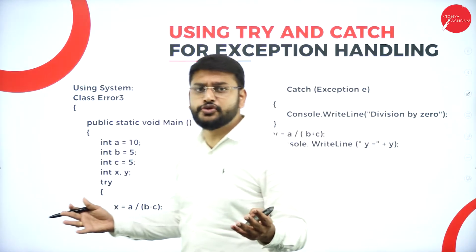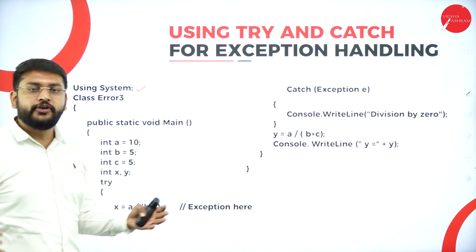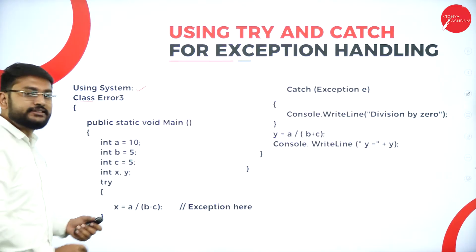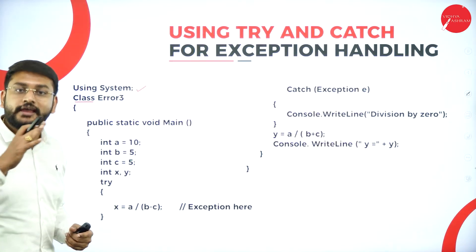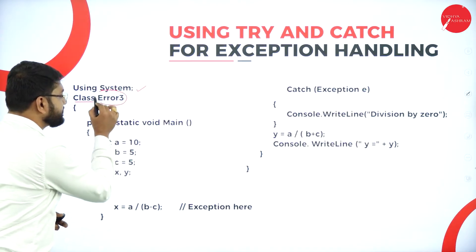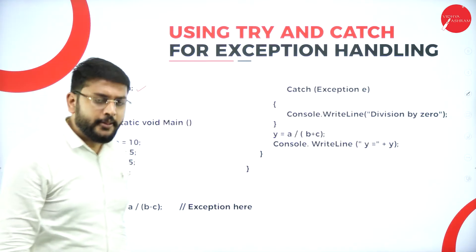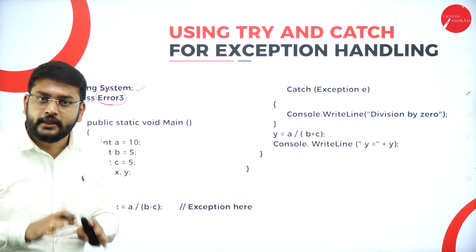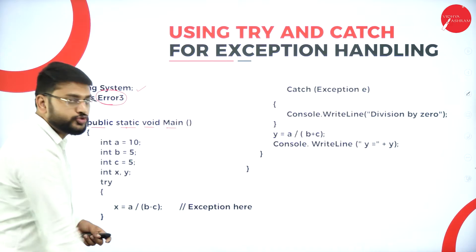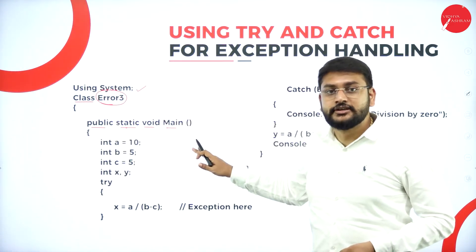I have taken a program here. As you all know, in the first line I have the namespace — we have been discussing this since the first session. After that I have the keyword 'class', which I use to declare a class. Followed by a space, I have given the name of the class as 'Error'. Then I have 'public static void main', which is the main method for this class.